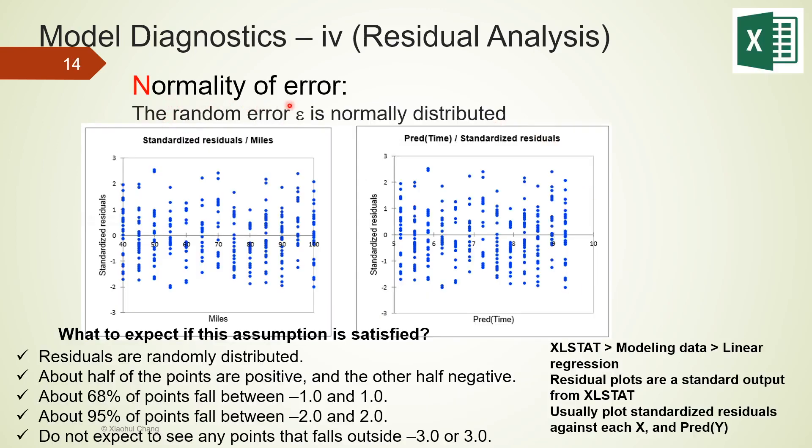The next assumption is normality of errors. We will assume the random errors to be normally distributed. What to expect if this assumption is satisfied? We are going to use the empirical rule to test this assumption. The empirical rule says that about 68% of the residual points should fall between plus minus 1. 95% of the points should be plus minus 2, and we do not expect to see any residuals fall outside of negative 3 or positive 3. By looking at our residual plots, it looks like the normality assumption is also valid. So this is positive 3, and this is negative 3. We shouldn't see any points beyond that. And roughly speaking, about 95% of the points should be between plus minus 2, and two-thirds of the observations should be between plus minus 1.